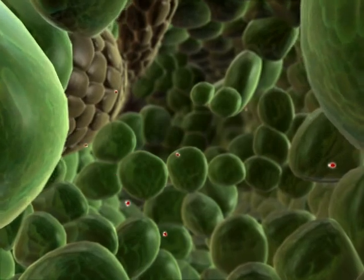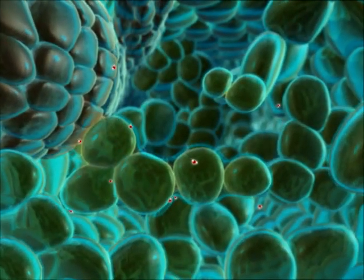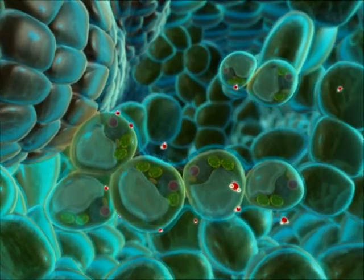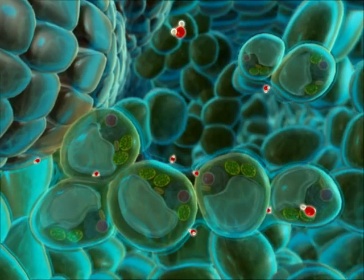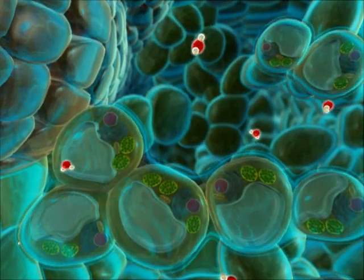To better see the water, let's show it in blue. Notice that water forms a film on cell walls, including the walls of cells in leaf veins.